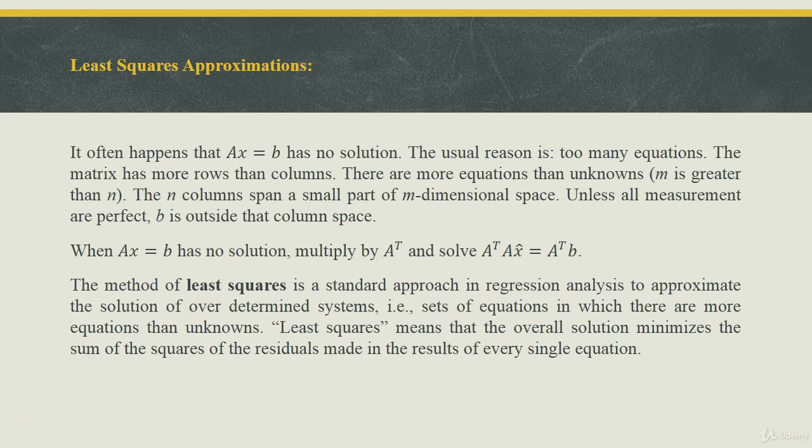When Ax = b has no solution, we multiply by A^T (the transpose of matrix A) and solve A^T A x̂ = A^T b. The method of least squares is a standard approach in regression analysis to approximate the solution of an overdetermined system, that is, a set of equations with more equations than unknowns. Least squares means the overall solution minimizes the sum of the squares of residuals made in every single equation.